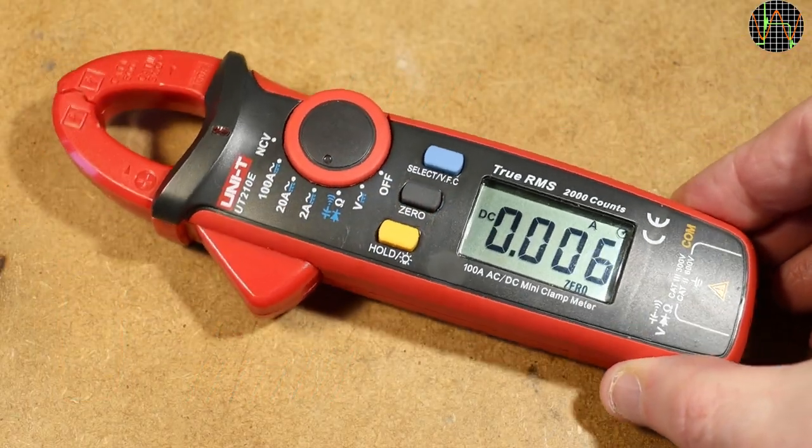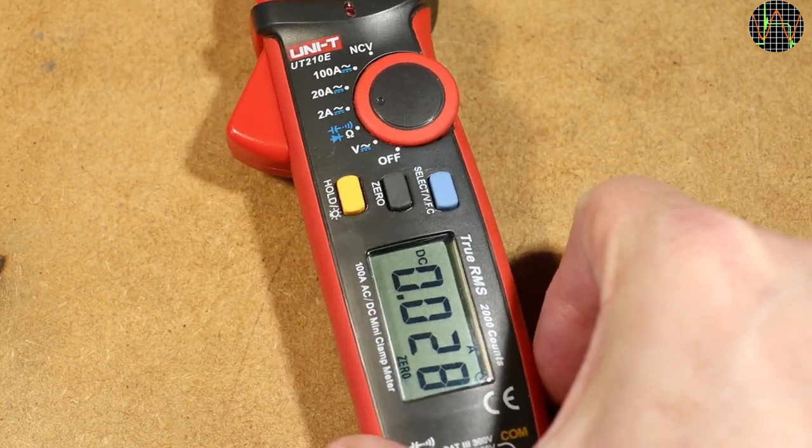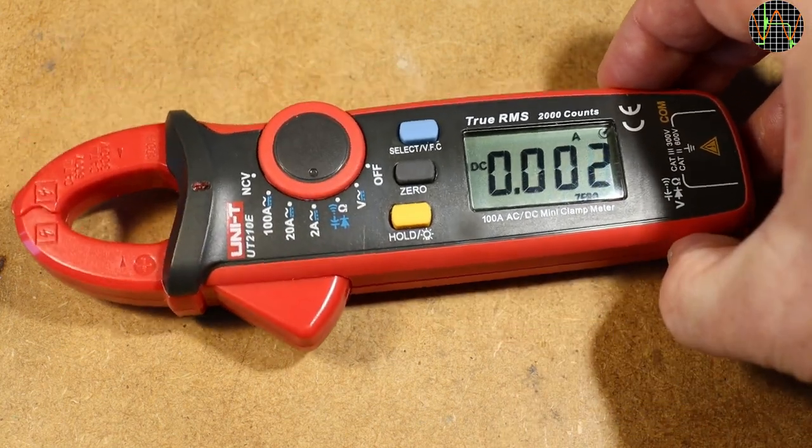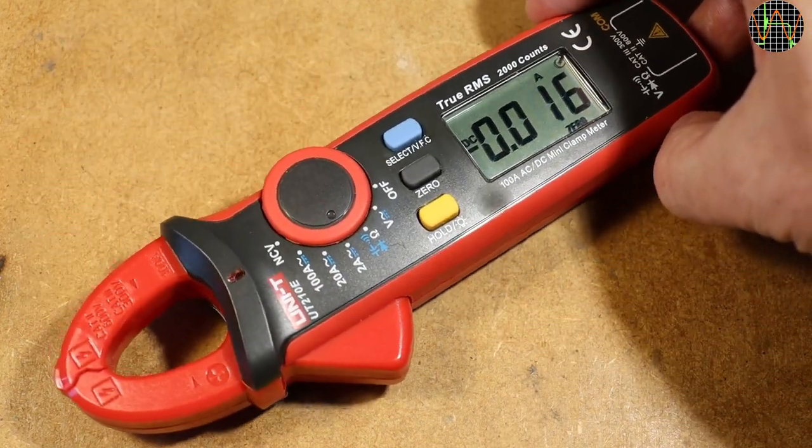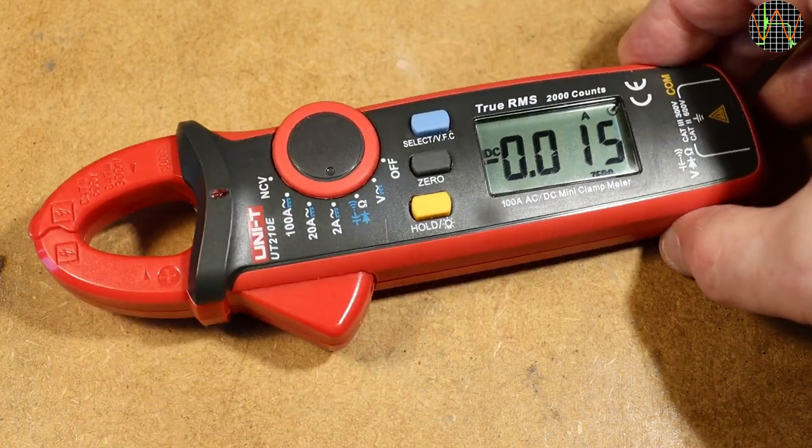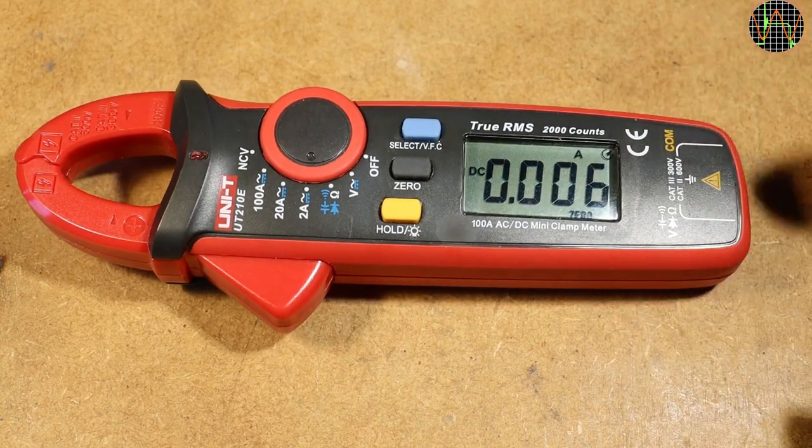Before covering the two procedures to adjust the trim pots in your UT-210E if your offsets are very high, I want to quickly go over how to measure currents correctly because some of your problems may actually originate from there, and if so, you may avoid having to touch the trim pots in the first place which is definitely the best solution.